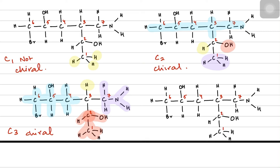Now focus on carbon 4. On carbon 4 you can see there's a hydrogen on top and a hydrogen at the bottom. So it can't be chiral, because it is bonded to two same groups — both of them are hydrogen. So it can't be chiral.